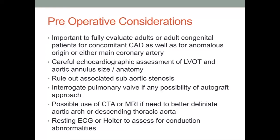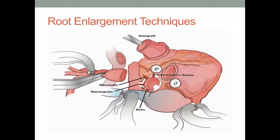Finally, a resting ECG should be ordered and reviewed to evaluate for any preoperative signs of atrial level dysrhythmia which may be addressed at time of surgical intervention. The following is a general schematic focusing upon the location of incision for several enlargement strategies. There is an error in this pictorial regarding the right versus left coronary arteries. This slide also illustrates to some extent the difference between anteriorly versus posteriorly directed root enlargement techniques.